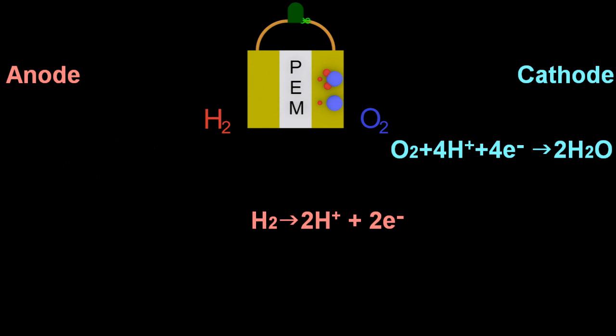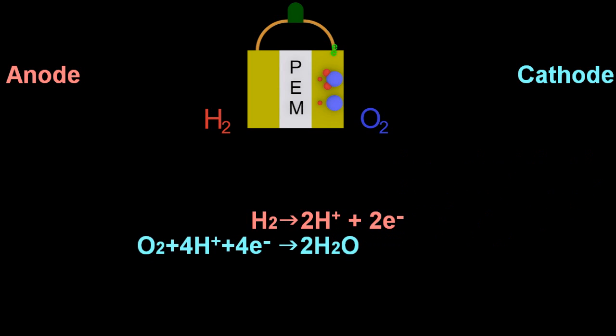So combining these two half equations to get the equation of the fuel cell, well we can't just do that without balancing the electrons first. There's two electrons in the top equation, the oxidation.